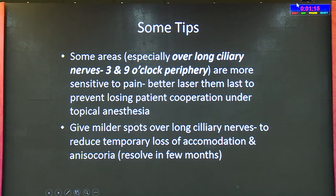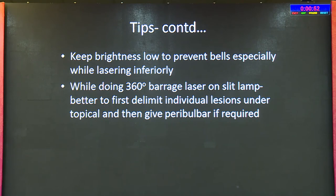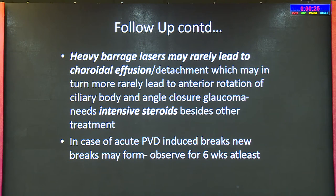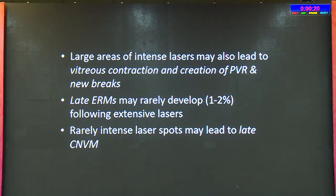For anesthesia: although the procedure is a little painful, topical anesthesia usually suffices. In cases requiring extensive lasers or an uncooperative adult, peribulbar may be needed. Areas at 3 and 9 o'clock over the long ciliary nerves are the most sensitive — laser these last, and give milder spots there to reduce temporary accommodation loss and anisocoria. Sufficient laser strength is usually achieved by two weeks. Heavy barrage lasers may rarely lead to choroidal effusion, requiring intensive steroids. Late ERMs may develop following extensive lasers, and intense spots may rarely lead to late CNVM.